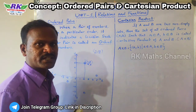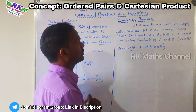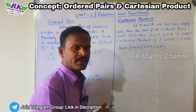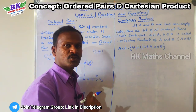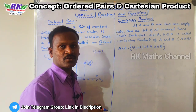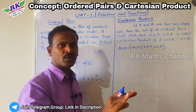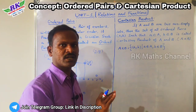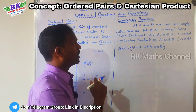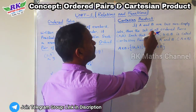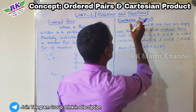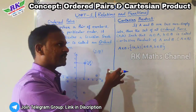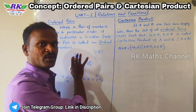Next, Cartesian product is very important. If A and B are two non-empty sets, then the Cartesian product is the set of all ordered pairs. This is defined as A cross B.